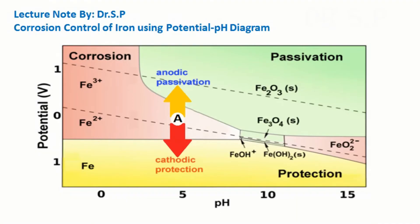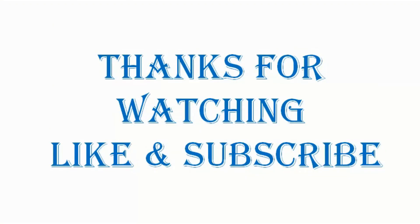Cathodic protection is used in the hull of a ship or an underground gas pipeline. The active metal, which must be higher than iron in the activity series, is also in contact with the solution and slowly corrodes, so it must eventually be replaced. The red and green regions of the diagram represent conditions under which oxidation of iron produces soluble and insoluble products, respectively.